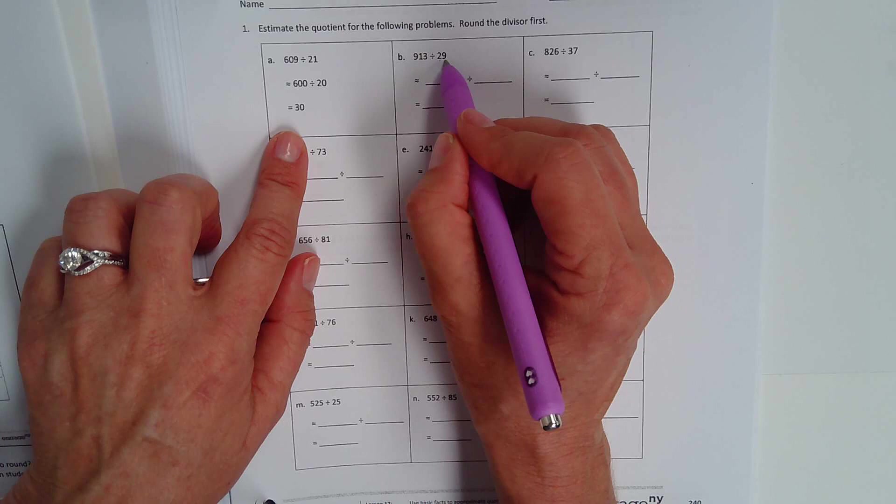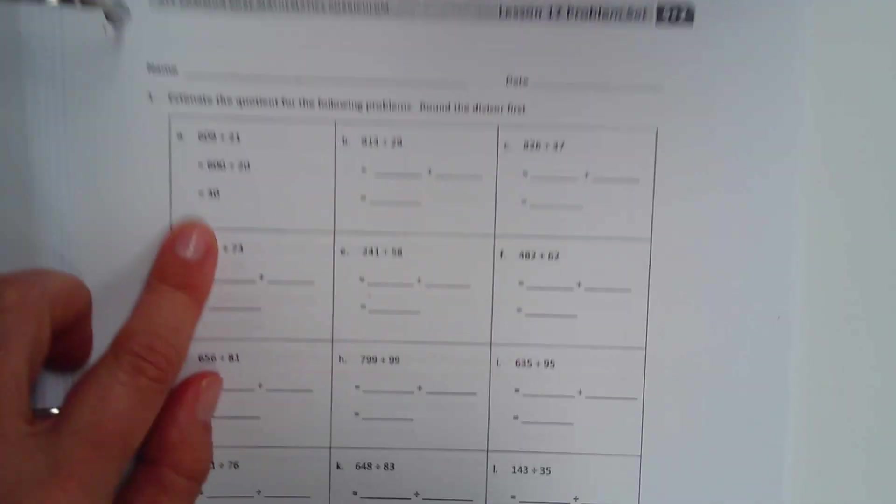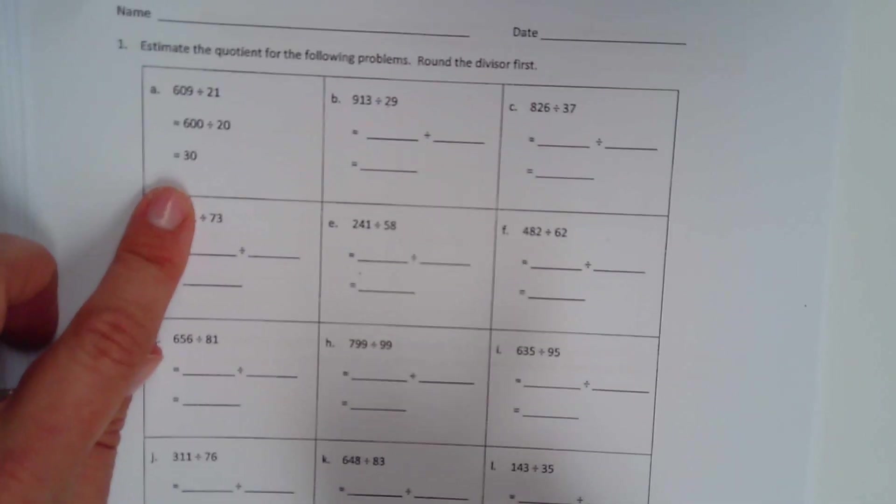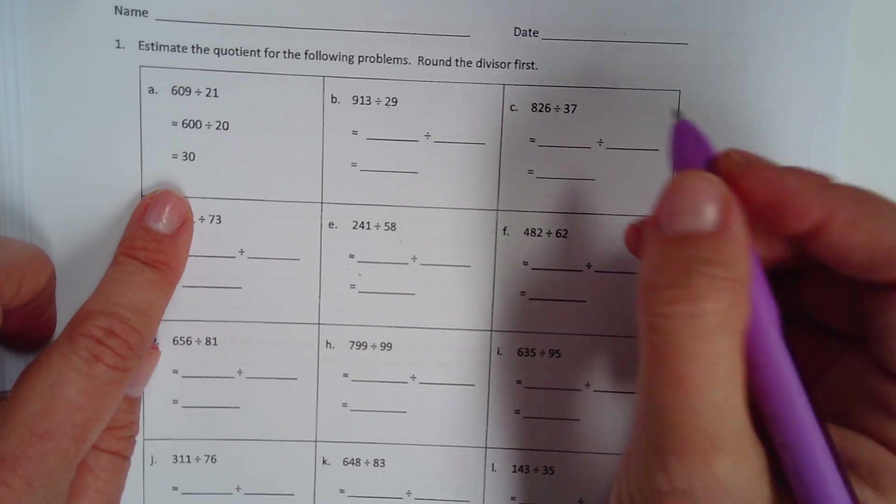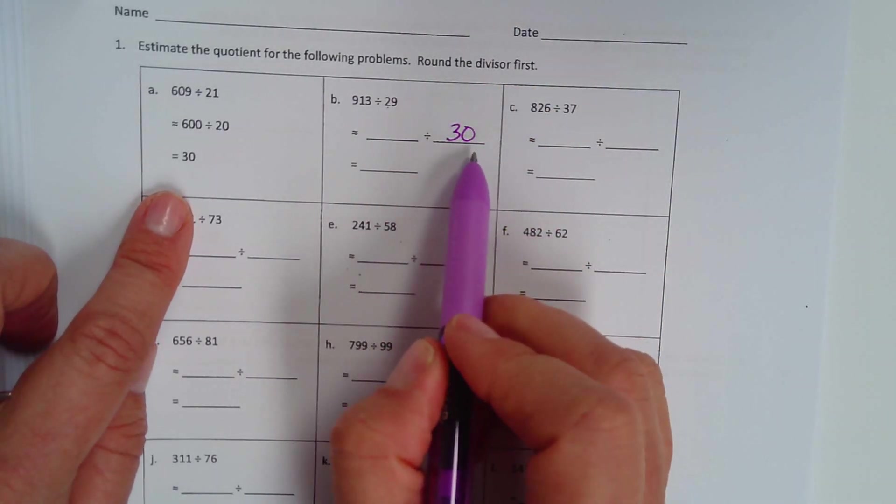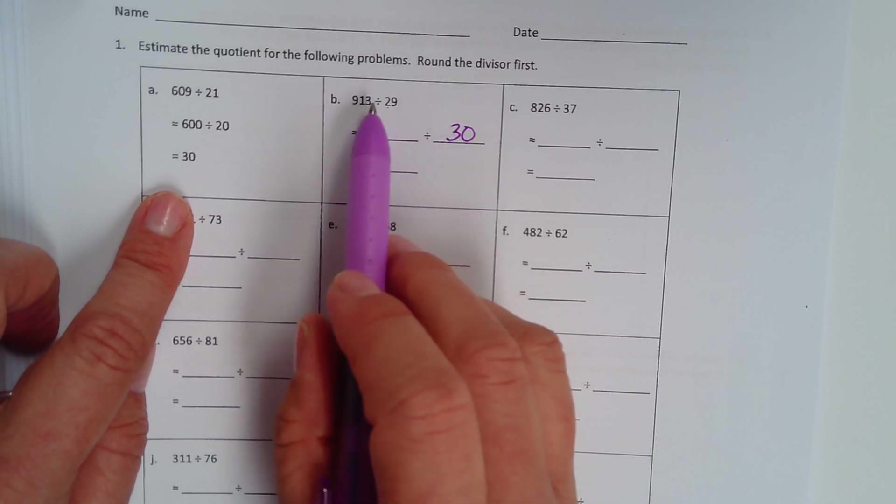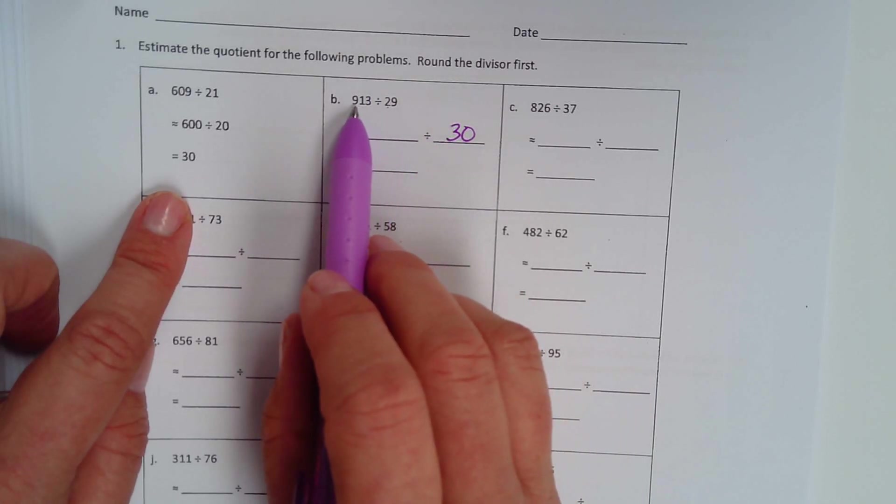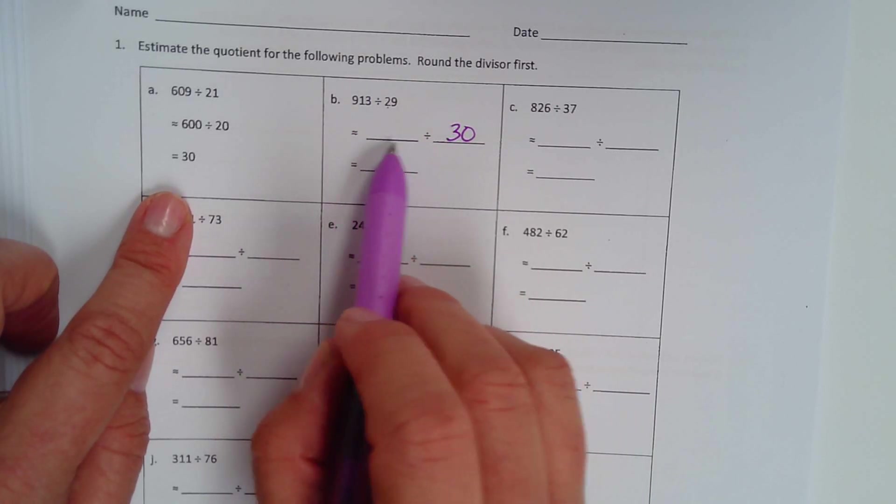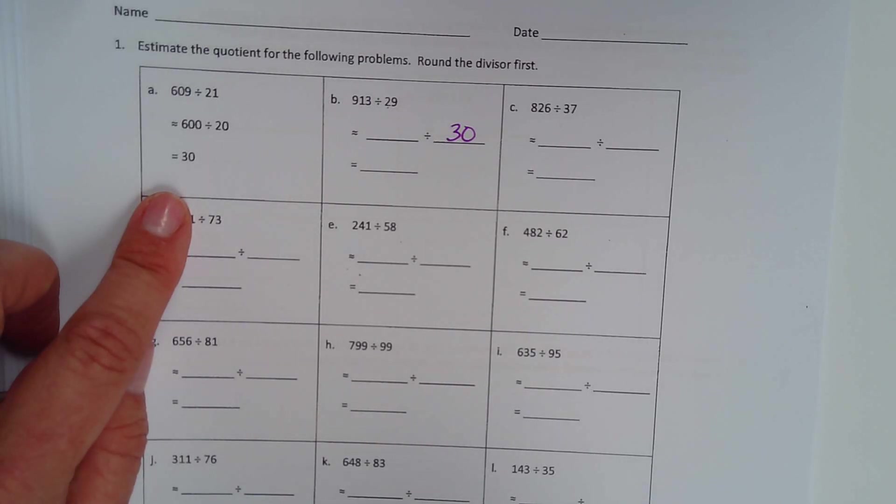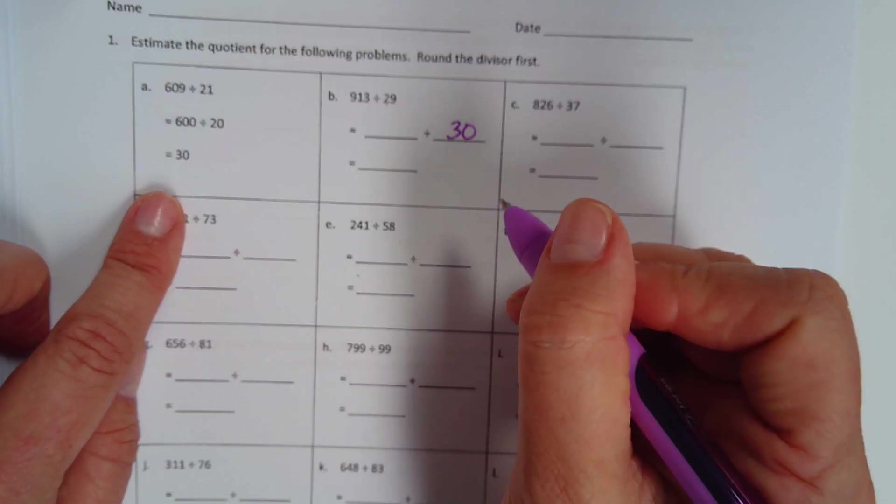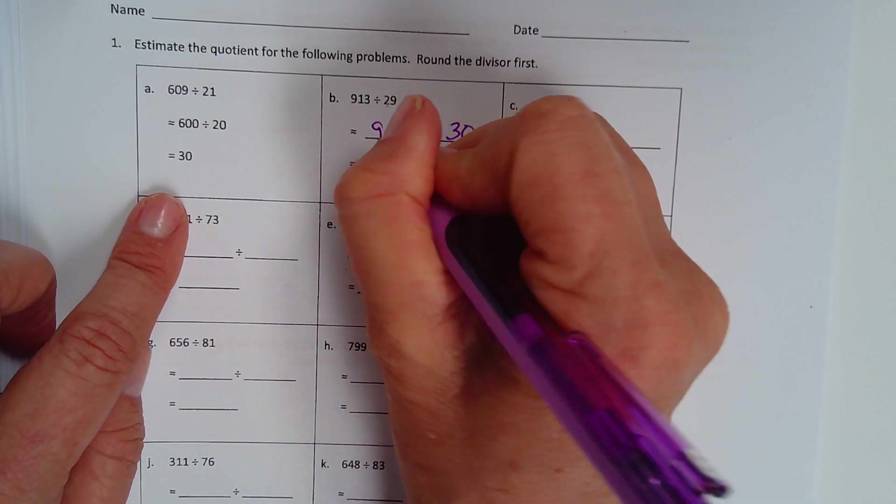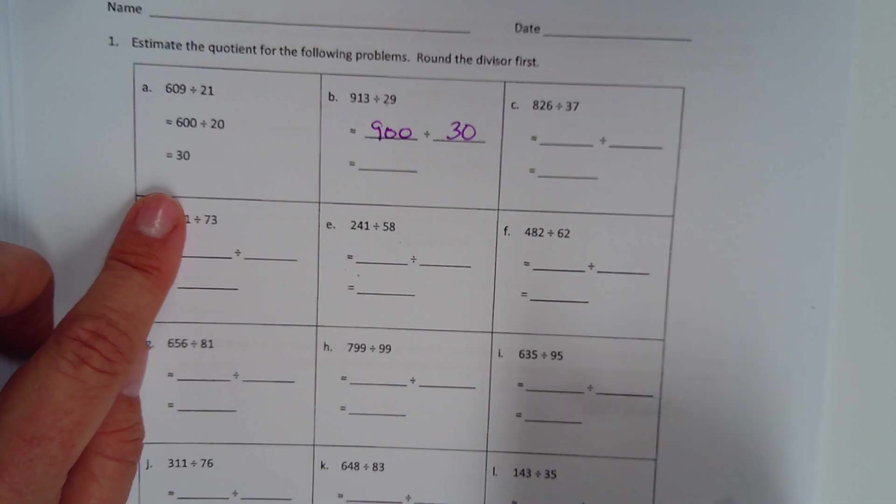29 would be a really good idea to round 29 to what? 30. Now, if I have a divisor of 30, what do you think I should round 913 to, to make it really easy to divide? 900, right?